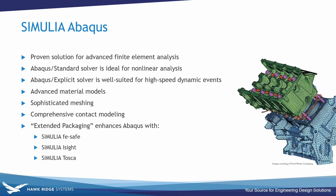Abacus is ideally suited to nonlinear analysis and uses the Abacus standard solver for those types of problems. It also comes with an explicit solver that works really well for high-speed dynamic events. Abacus is really strong when you need to represent advanced material models, have complicated or detailed meshing, or have a lot of contact in your model. It is also offered as extended packaging, which includes FE Safe — a fatigue analysis tool — iSight for process automation, and Tosca for topology and shape optimization.